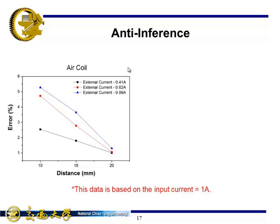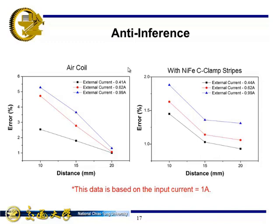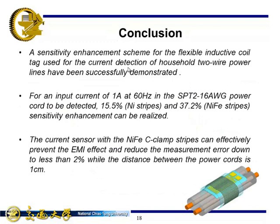Here shows the result. For the air core without magnetic field attached, the error is about 5% while the other power cord is located at 1 cm away and loaded with 1 amp. With the magnetic iron C-clamp stripes, the error percentage is dropped to less than 2%.